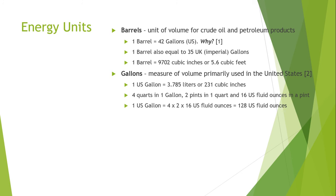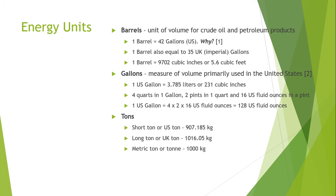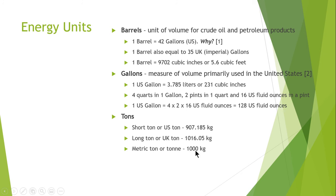Next comes tons. Short tonne or US tonne is equal to 907.185 kilograms. Long tonne or UK tonne is 1016.05 kilograms. And metric tonne is equivalent to 1000 kilograms.